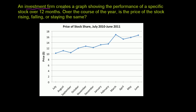An investment firm creates a graph showing the performance of a specific stock over 12 months, tracking whether the price of the stock is rising, falling, or staying the same over the course of the year.